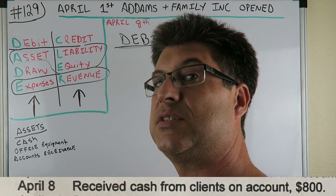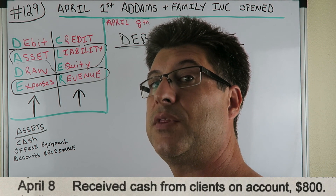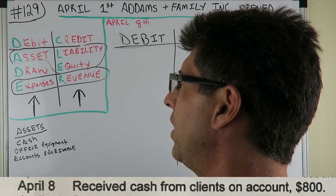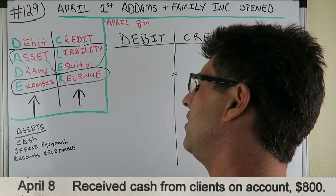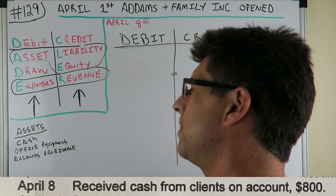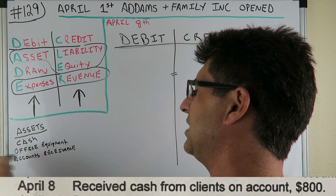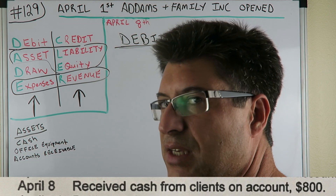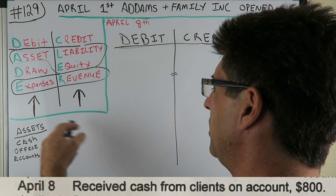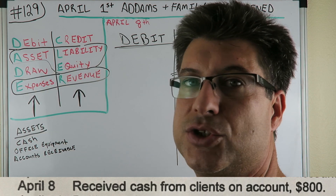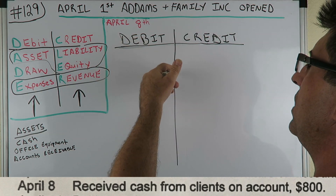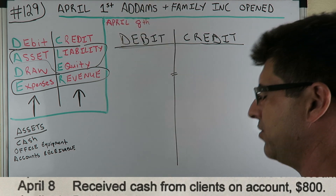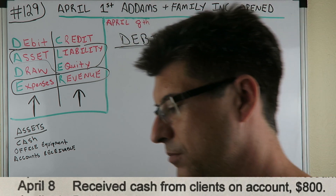We have some assets over here that we've already figured out. I'd suggest putting them on your side as well — cash is an asset, office equipment is an asset, accounts receivable is an asset. Keep adding them as we go through more journal entries. Debits always equal credits when doing journal entries. So, April 8th — here's the journal entry we're doing.